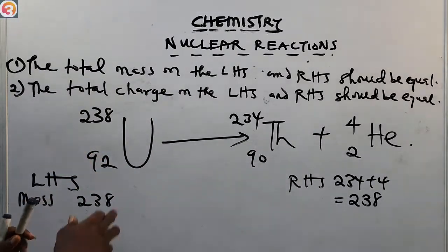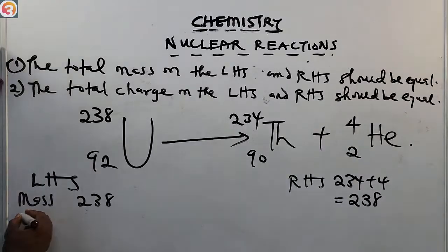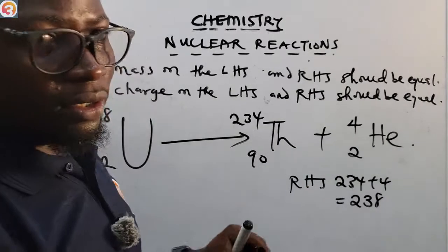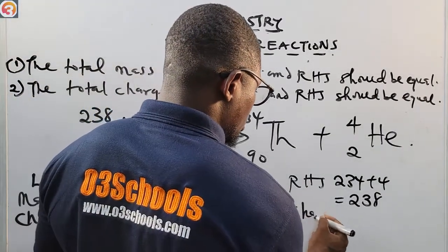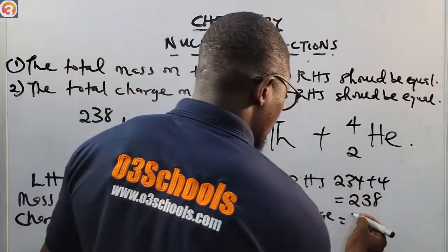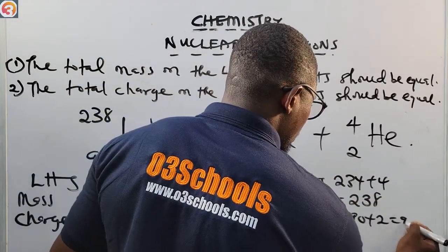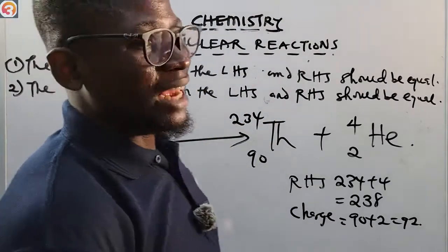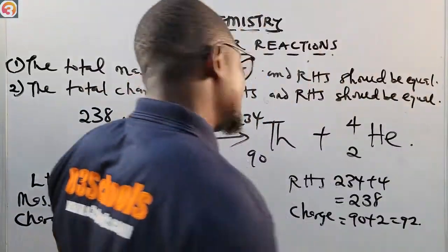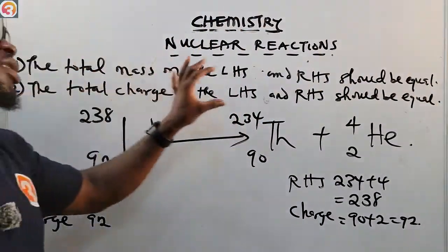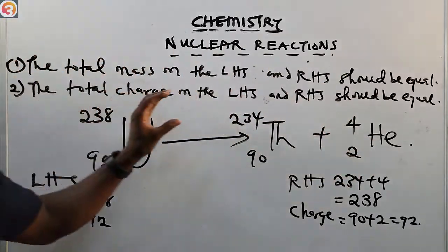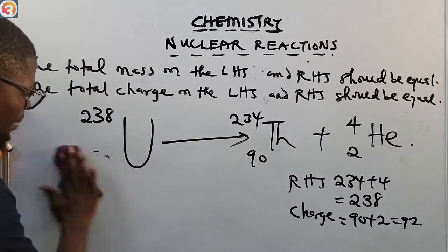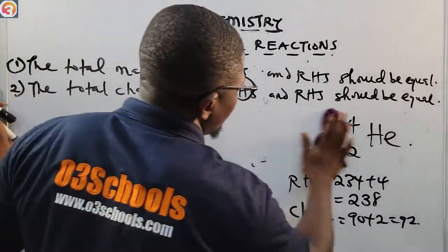Now the charge on the left-hand side is 92. On the right-hand side, the charge is 90 plus 2, which also equals 92. So the total charge on the left equals the total charge on the right. This means the nuclear reaction is balanced. These are the two most important rules: total mass must be equal on both sides, and total charge must be equal on both sides.